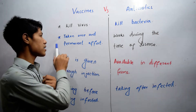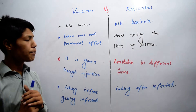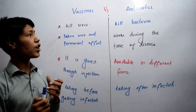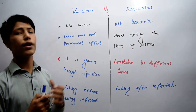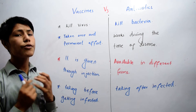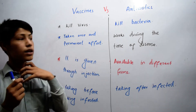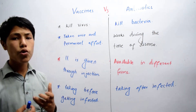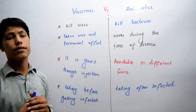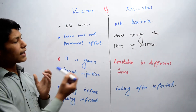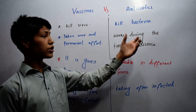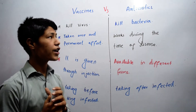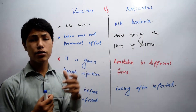The second difference is that vaccines are taken once and have a permanent effect. When we take a vaccine for the first time, it will have effect forever. For example, if we take the polio vaccine, it will be effective forever. When any virus like the polio virus enters your body, it will destroy that virus. While on the other hand, antibiotics work only during the time of disease — if any disease is caused by bacteria, antibiotics are used at that time.